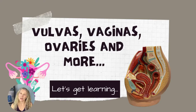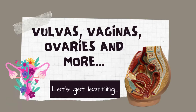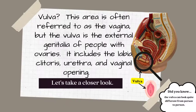If you'd like a copy of the information I'm sharing today, there'll be a link down below to my Teachers Pay Teachers account. The vulva — this area is often referred to as the vagina, but the vulva is the external genitalia of people with ovaries. It includes the labia, clitoris, urethra, and vaginal opening.